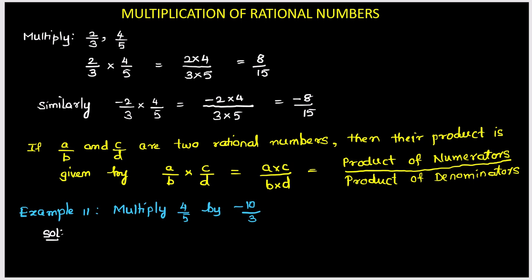Example 11: here you see it is asked to multiply 4 by 5 by minus 10 by 3. So the product of 4 by 5 and minus 10 by 3 can be written as 4 by 5 multiplied by minus 10 by 3. So here as mentioned above, you have to write the product of two numerators, that is 4 multiplied by minus 10, upon 5 multiplied by 3. Now here you observe that 5 and 10, they are divisible by 5. 5 is the common factor of 10 and 5. So both numbers if you divide by 5, 5 divided by 5 one time.